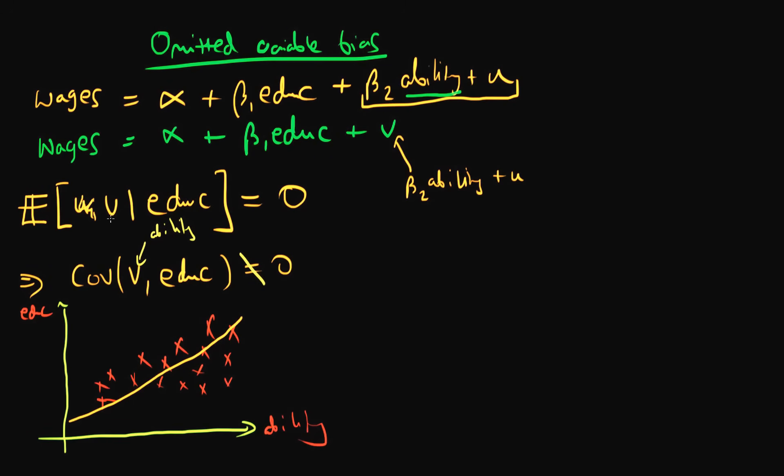Which means in turn that the expectation of v, given someone's individual level of education, does not equal zero. So we have got a violation of the Gauss-Markov assumption. And it's quite a serious one.